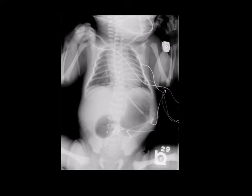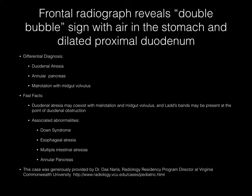Now pause your media player. This frontal radiograph demonstrates a prominent amount of air in the stomach and a dilated proximal duodenum — the so-called double bubble sign. This is somewhat classic for duodenal atresia, but annular pancreas and malrotation with midgut volvulus are also standard differential diagnoses given this appearance.